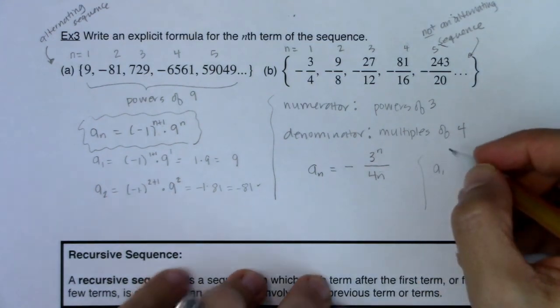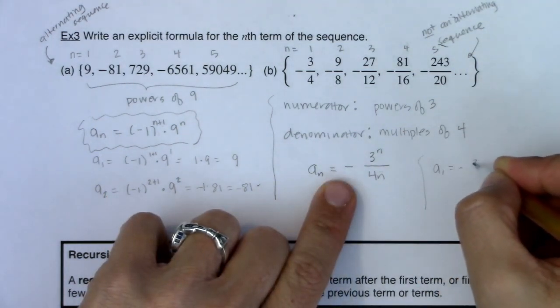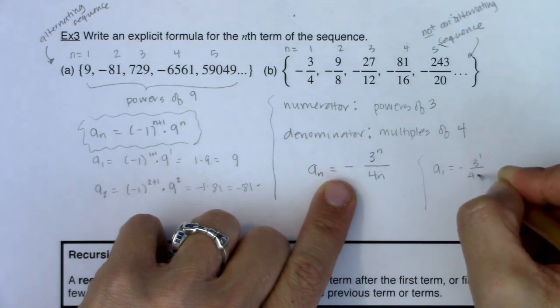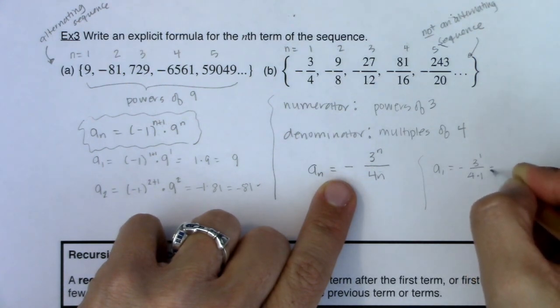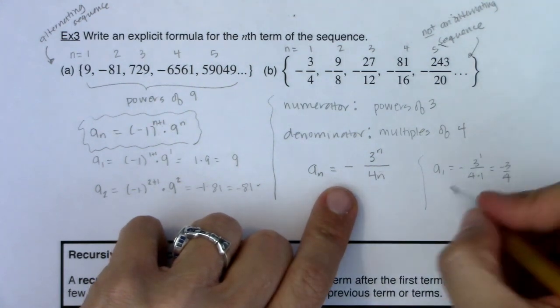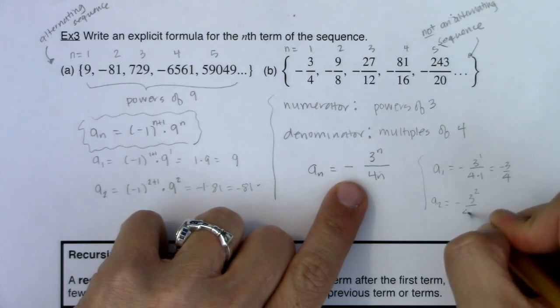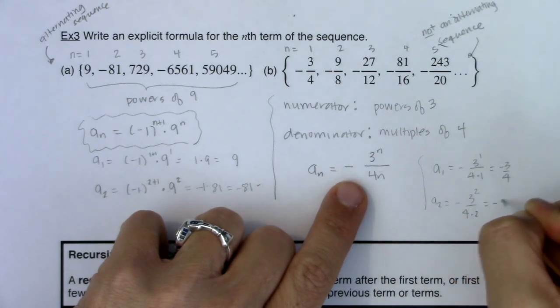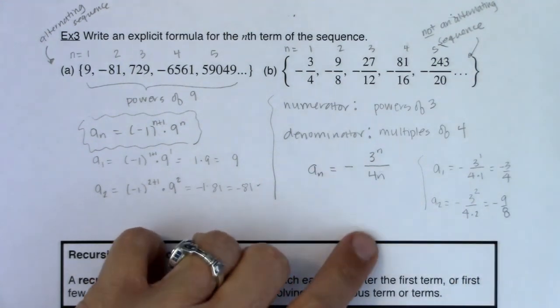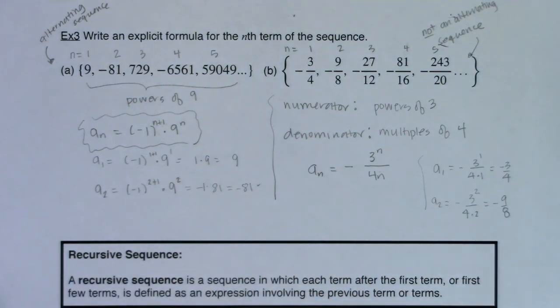Let's see what a sub 1 would give me. This would be negative 3 to the 1 over 4 times 1. Well, 3 to the 1 is 3, 4 times 1 is 4, negative 3 fourths. That's looking good. Let's try a sub 2. I'll have a negative, we'll have 3 squared over 4 times 2. Well, that is negative 9 eighths. That's looking pretty good. So I'm feeling pretty solid about that.